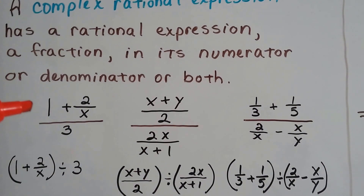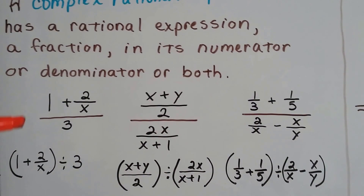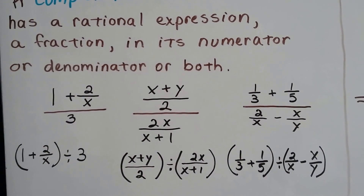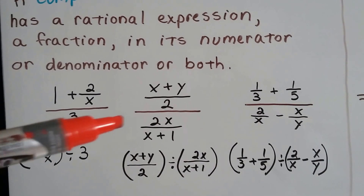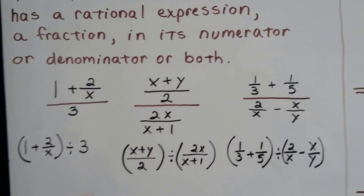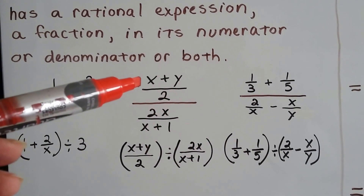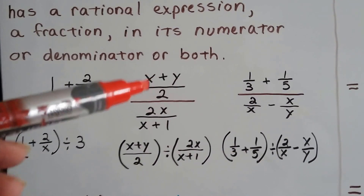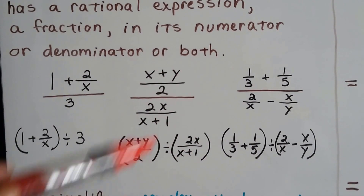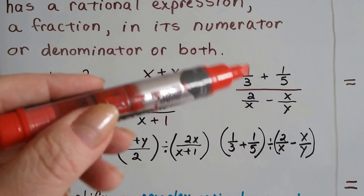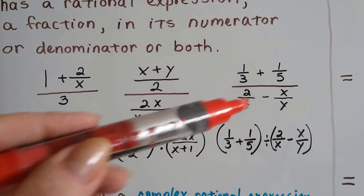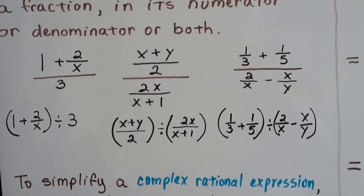When you look at these, this one just means 1 plus 2 over x divided by 3. We can take away that fraction bar and just put a division sign there. And the same with these — it just means that this is divided by this.